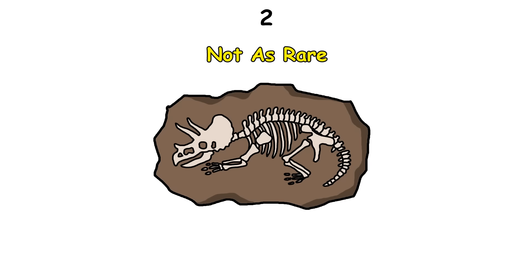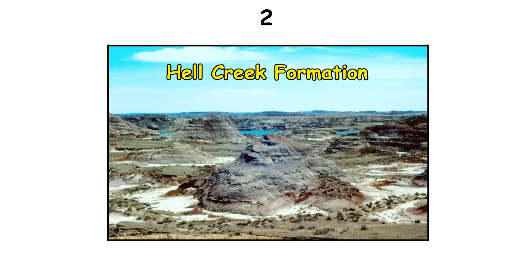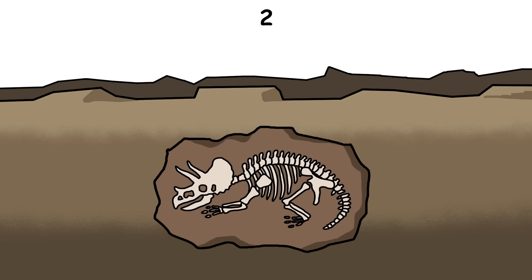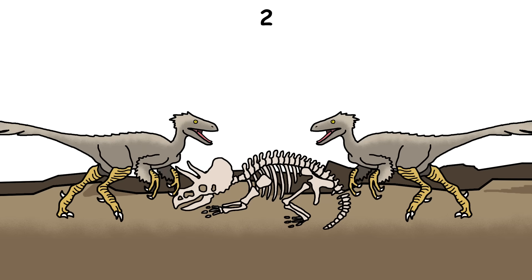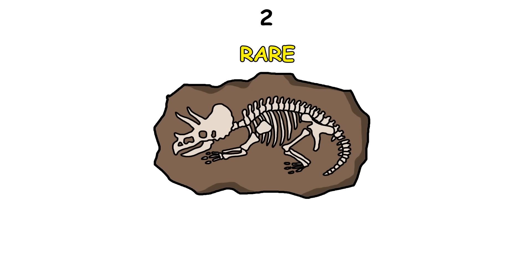Dinosaur fossils are not as rare as people think, as long as you're in the right place. Areas like the Hell Creek Formation in North America contain many fossils. If you know what to look for, you can find fossil fragments within minutes. What's rare is finding complete or well-preserved skeletons, because after death, most dinosaurs were scavenged or destroyed by erosion, making full fossils a rare occurrence.